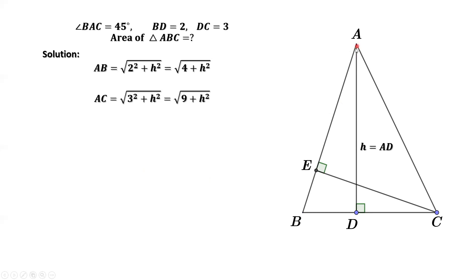From this right triangle AEC, sine of angle BAC equals opposite over hypotenuse, which is CE over AC. AC equals square root of 9 plus H square.